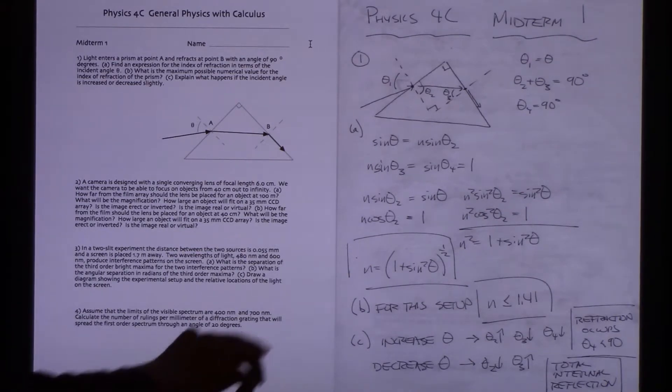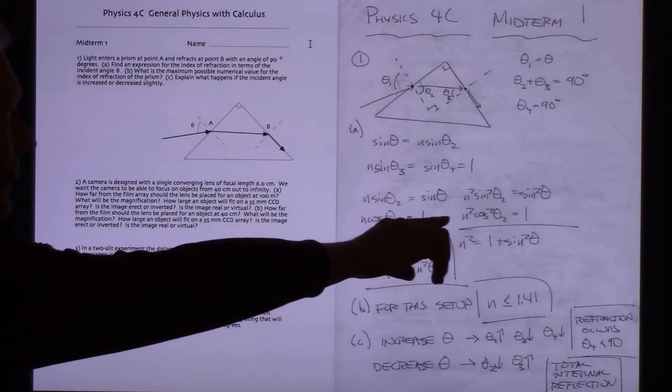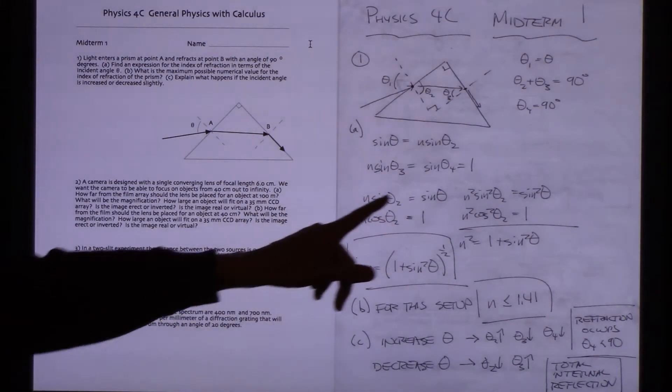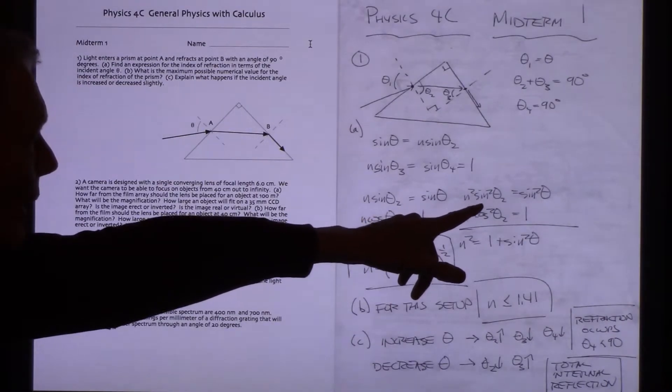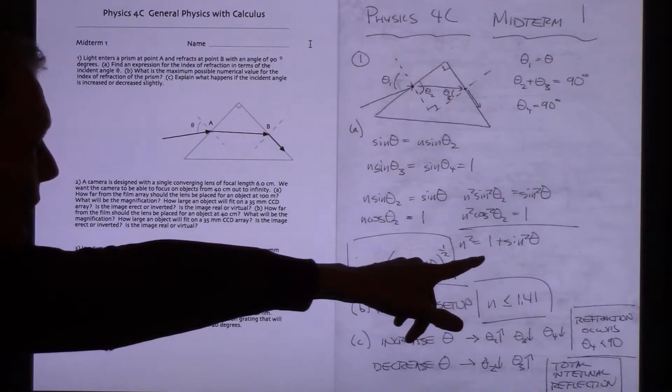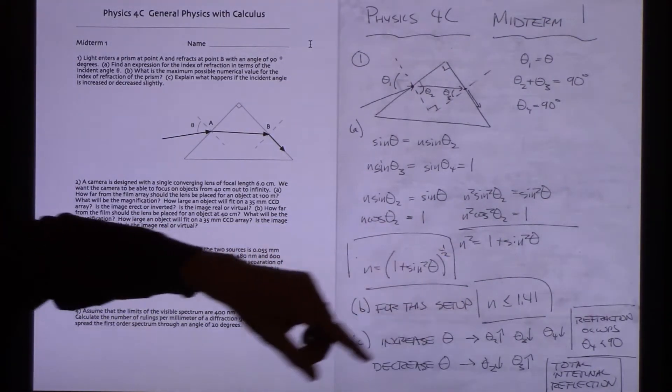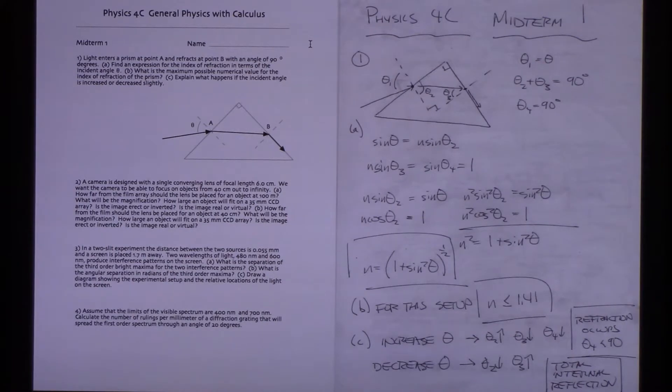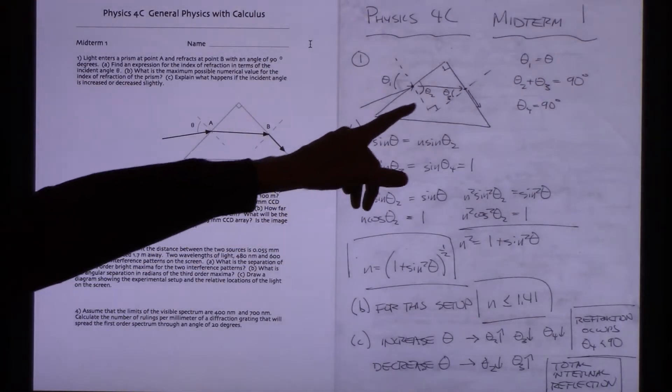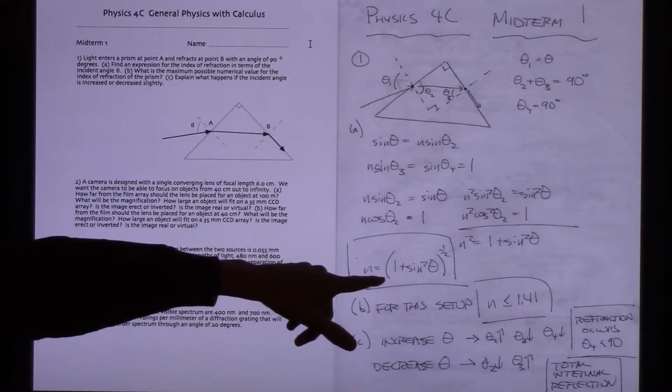I took the two equations that I had ended up with and squared them, because I noticed that I now had a sine squared theta 2 and a cosine squared theta 2, added those together, and so I ended up with n squared is equal to 1 plus sine squared theta. I was able to eliminate theta 2 and theta 3 and get the index of refraction formula entirely in terms of theta.